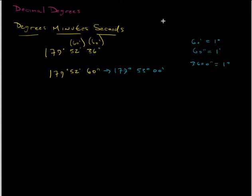If you have 1 degree and you want to get to seconds, there's 60 minutes in 1 degree, and there's 60 seconds, 60 seconds in 1 minute. So this would get us to seconds.